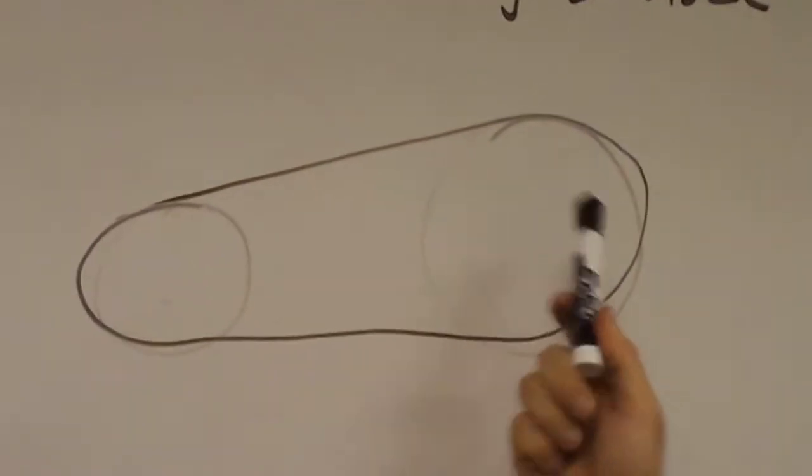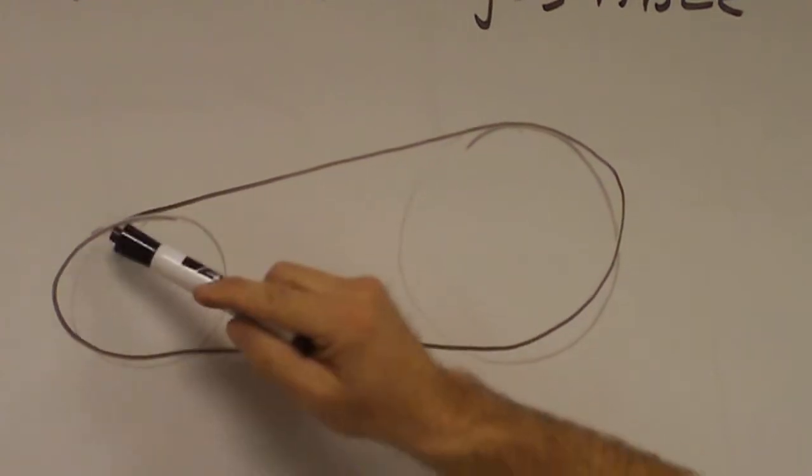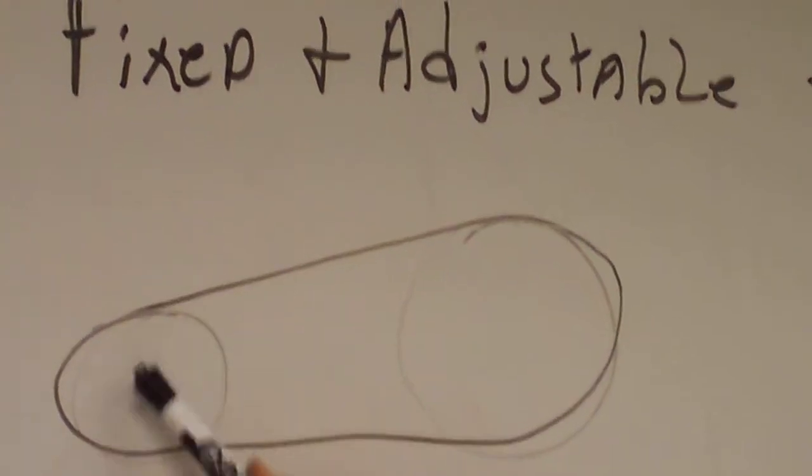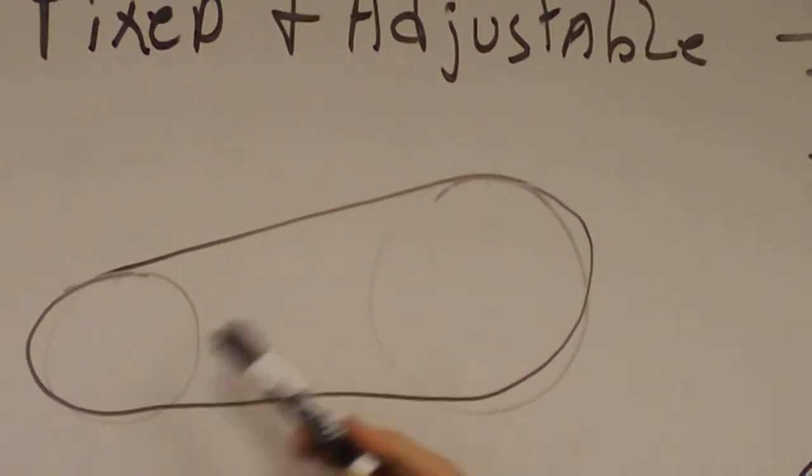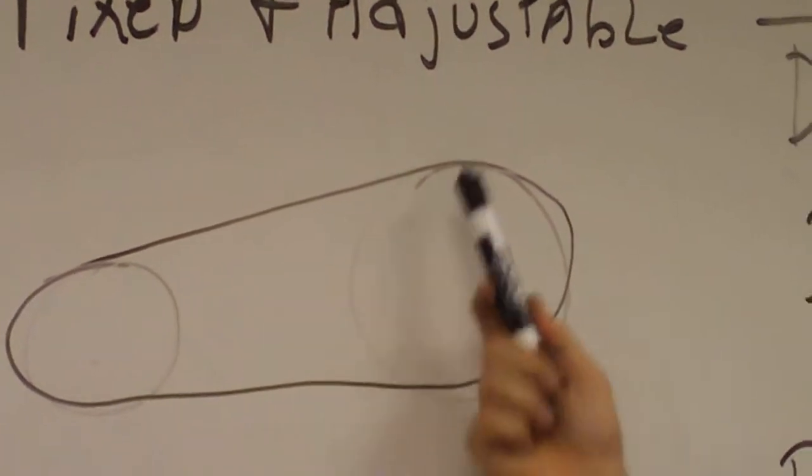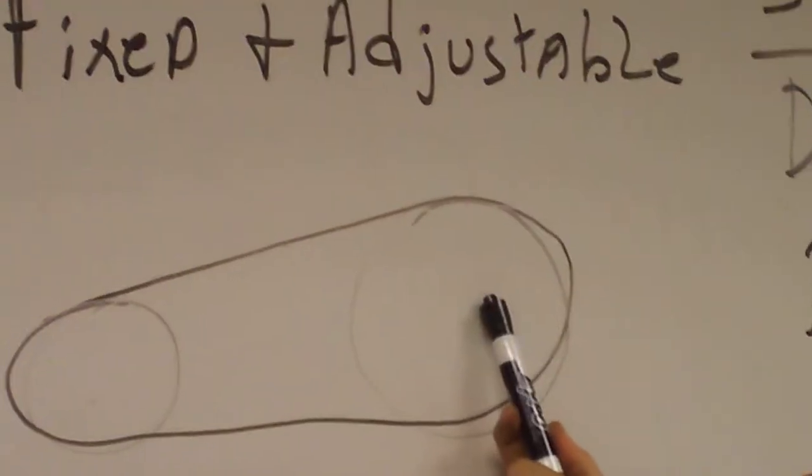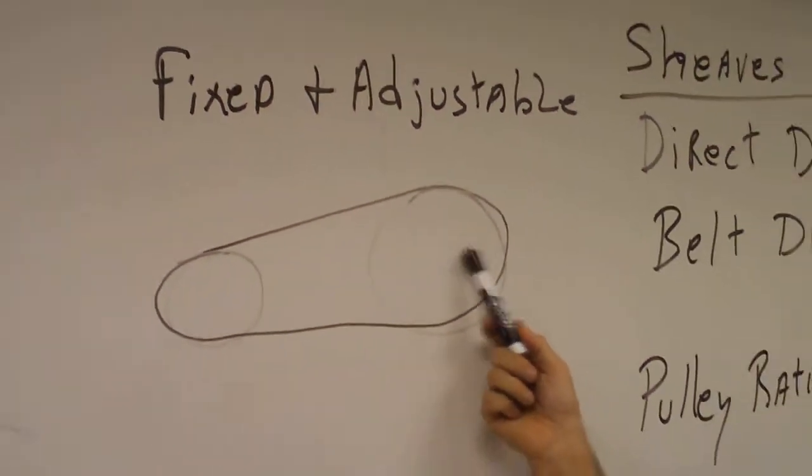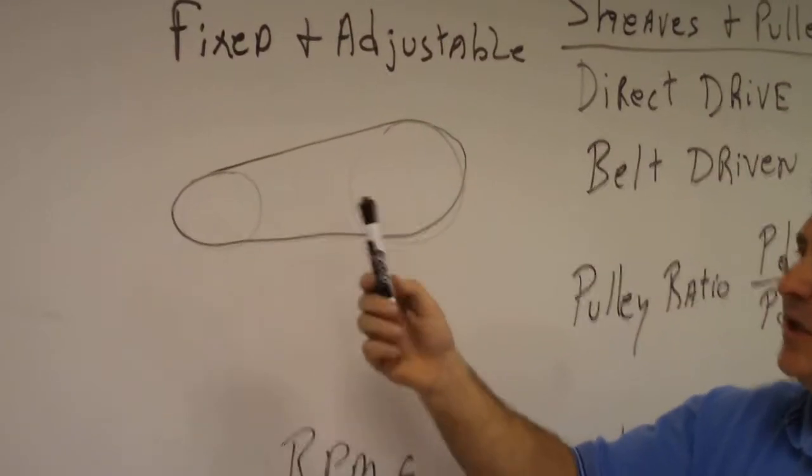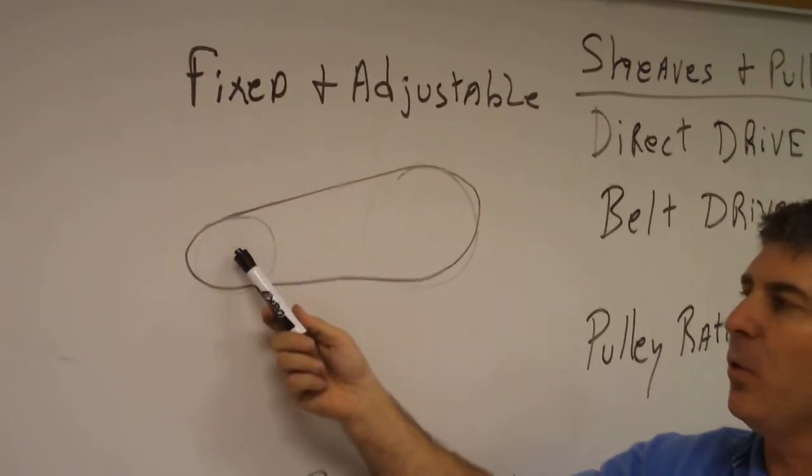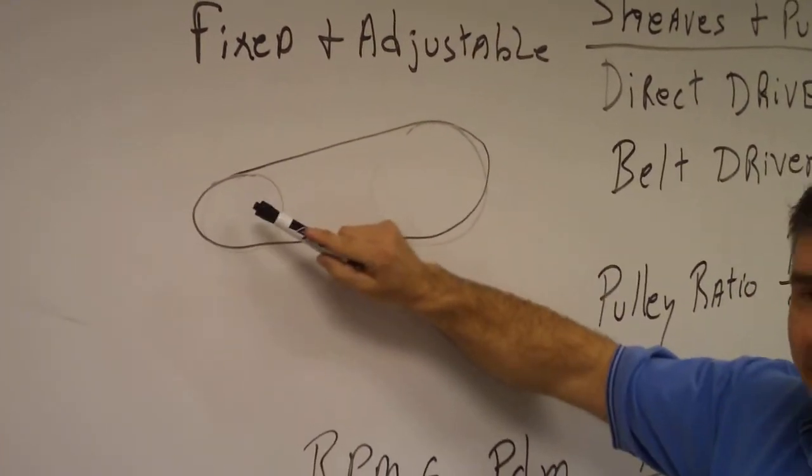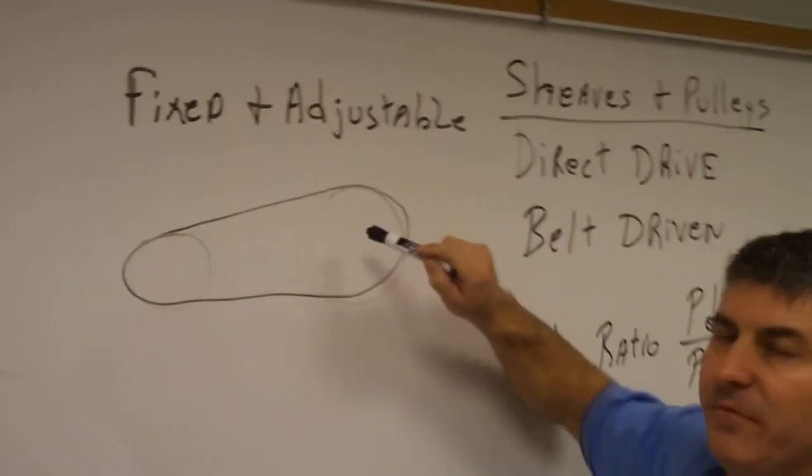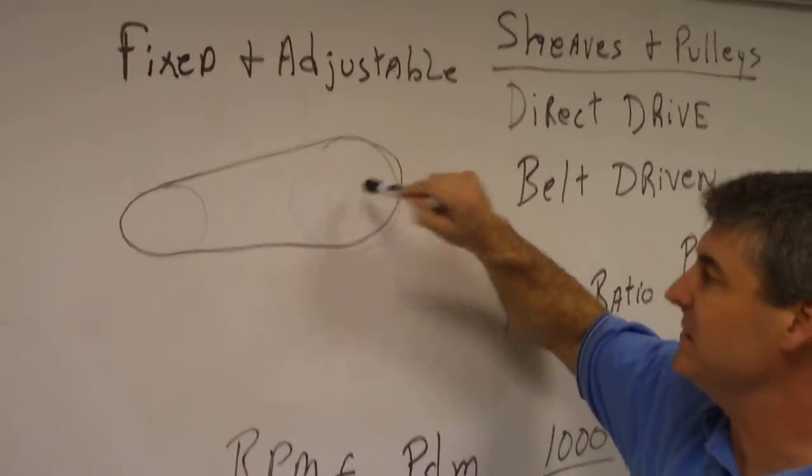Now these two pulleys are attached by a belt. That's how the motor turns a certain RPM and then that in turn drives the blower pulley. That's what generates the airspeed. In every instance, you're going to find the motor pulley smaller than the fan or blower pulley.